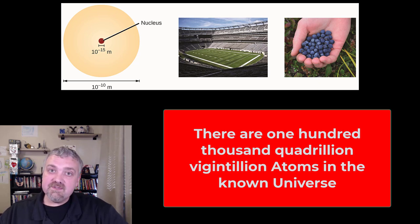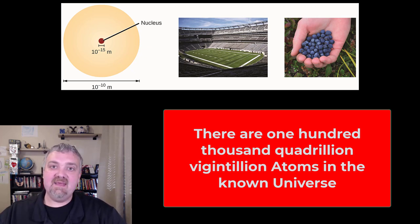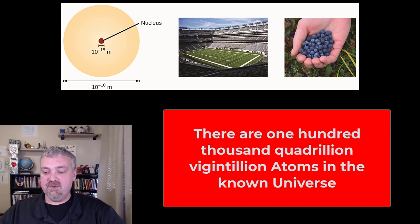First of all, in the known universe, there are estimated to be 10 to the 82nd atoms in the known observable universe. That's only what we can observe. Obviously, there's way more universe out there, so we have no idea what the actual number is. That would be 100,000 quadrillion vigintillion atoms. That's how many atoms are in the known observable universe.